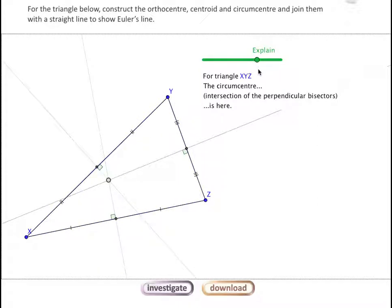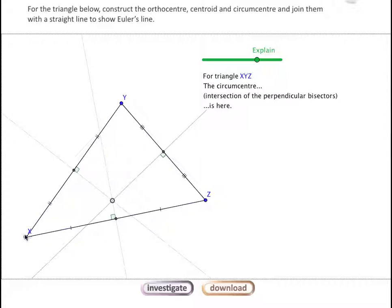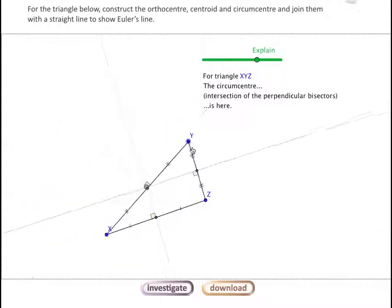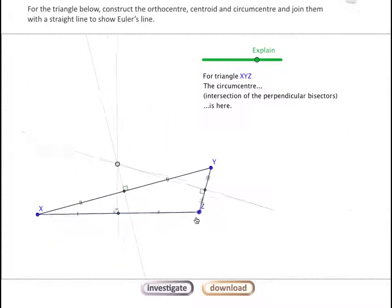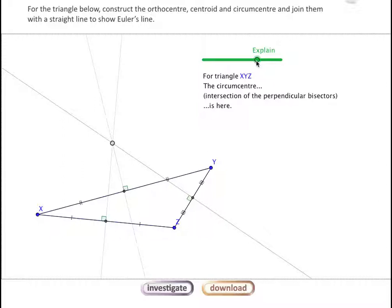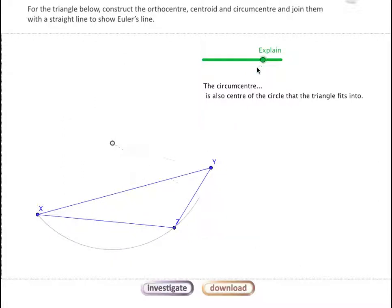It's also possible if we rearrange this triangle to get the circumcenter to sit outside of the triangle itself. If we return to the drawing of the circle, we can see that the circle is still touching each of the vertices.